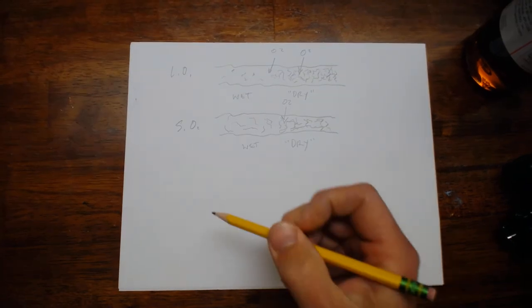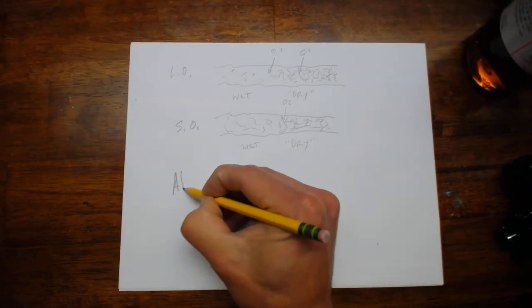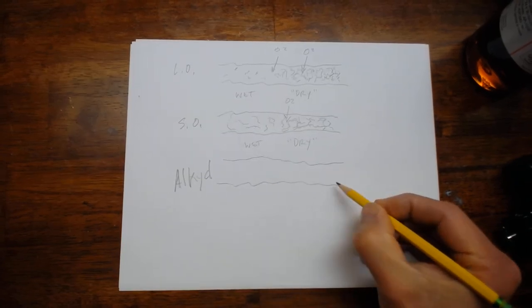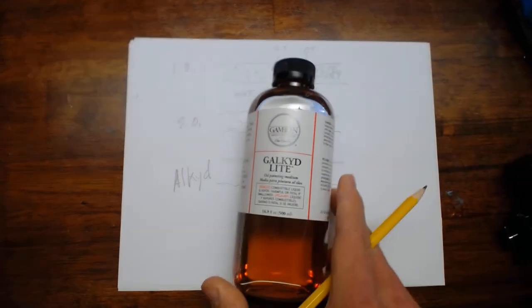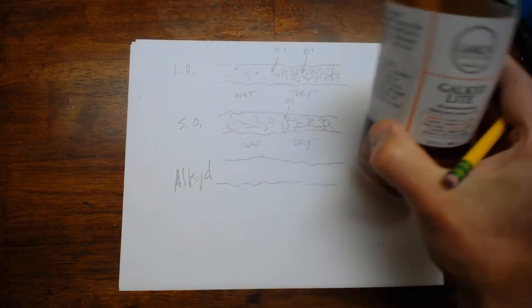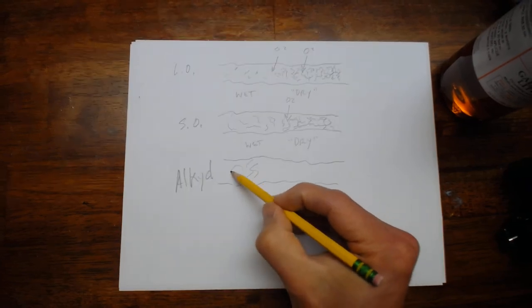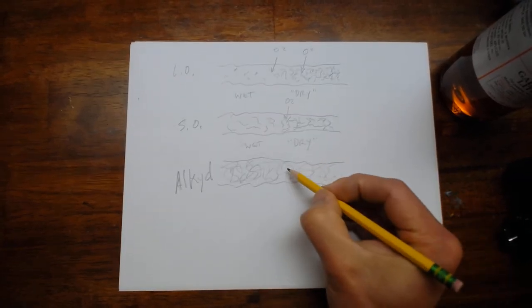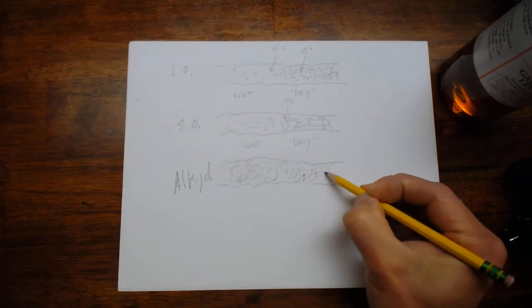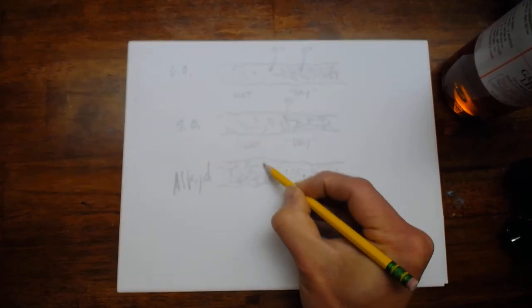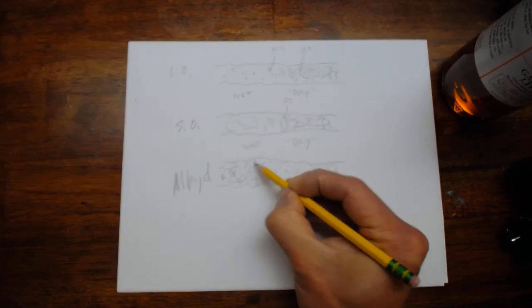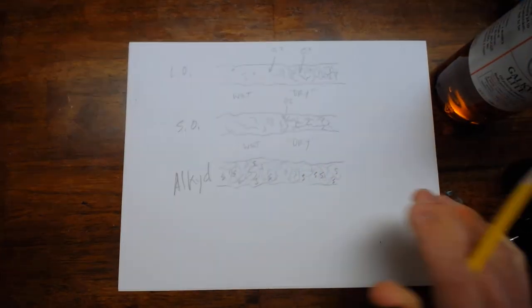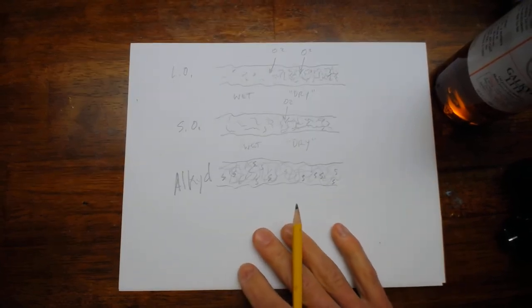And then in the 20th century, we have the development of alkyds. And an alkyd is actually made by a soy oil. And the soy oil is so highly cooked and polymerized that a solvent is included to keep those chains of polymerized soy oil far enough away from each other so it's a fluid medium. And alkyd mediums can be created at different viscosities, they can be fluids, they can also be gels.